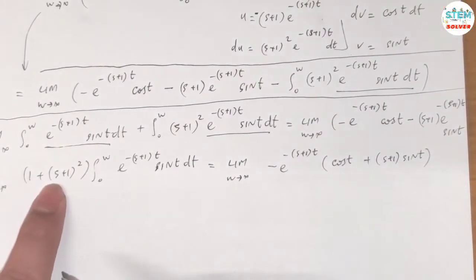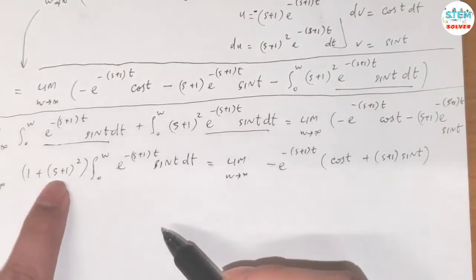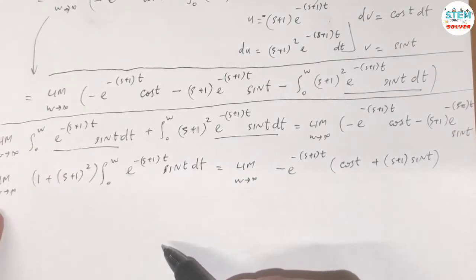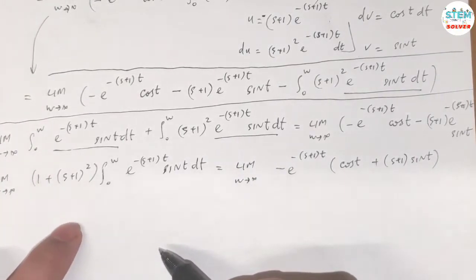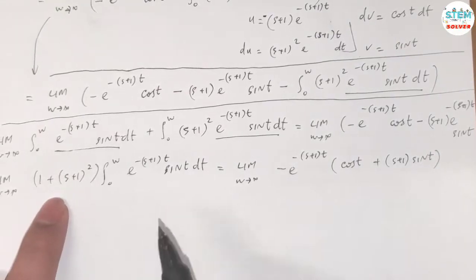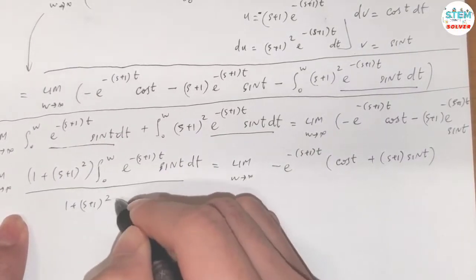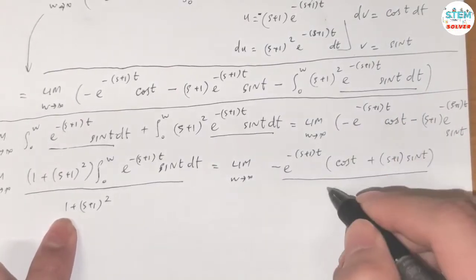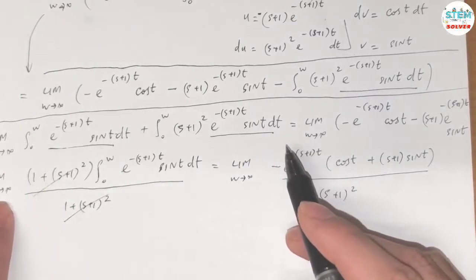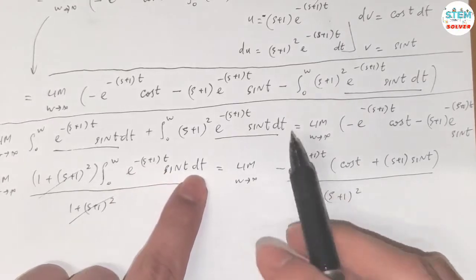Since s is treated as a constant when integrating with respect to t, we can factor it out. Dividing both sides by [1 + (s+1)²], we isolate the limit as w goes to infinity of the integral from 0 to w of e^(-(s+1)t)·sin(t) dt on the left side.